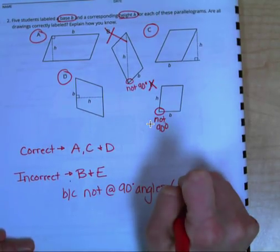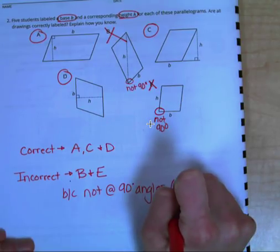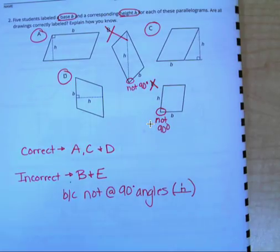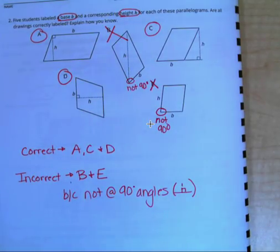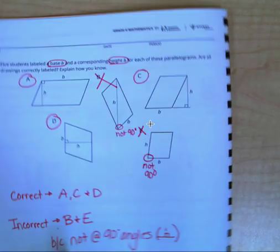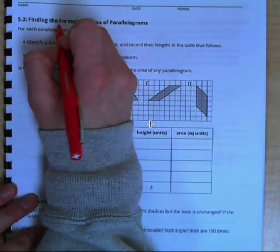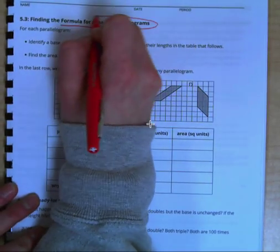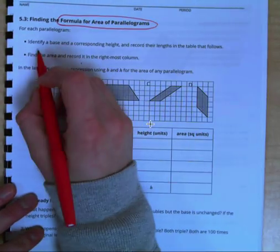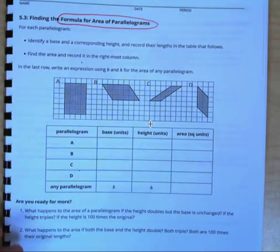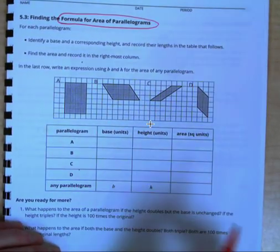You will know it's a 90-degree angle because they will have that symbol for you. If they don't have that symbol for you, it is not a 90-degree angle, unless you know it's a square or rectangle because all four corners are 90-degree angles. Alright, we'll flip the page to page 20. And what we're going to do here is find a formula that will help us solve for the area of parallelograms. So first, we need to identify a base and corresponding height, and then record their lengths in our table, and then we will find the area.